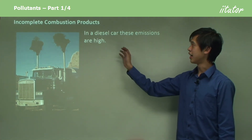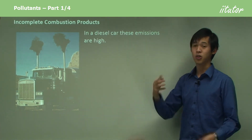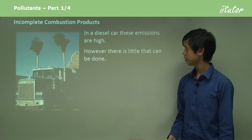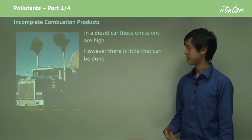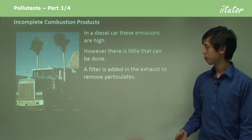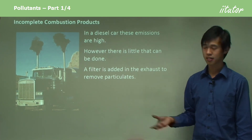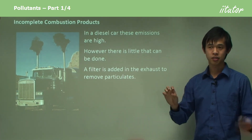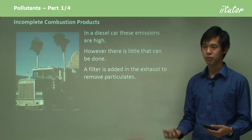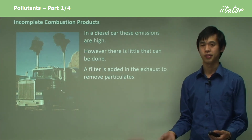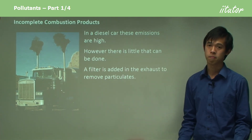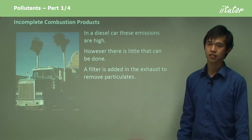In a diesel engine, these emissions are quite high because the way a diesel engine works is a little bit different. There's really little that can be done about CO particularly in diesel engines. But in terms of particulates, we can put a filter in the tailpipe to catch all those particles coming out, and then burn them off later on. So we can deal with the particulates, but we're not so good at dealing with the CO in a diesel engine — whereas in a petrol engine, the catalytic converter handles it fine.